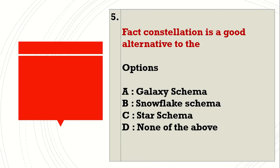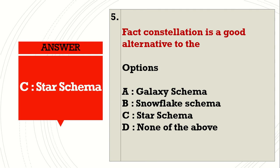Fact constellation is a good alternative to the Dash. Options: A. Galaxy Schema, B. Snowflake Schema, C. Star Schema, D. None of the above. Answer: C. Star Schema.